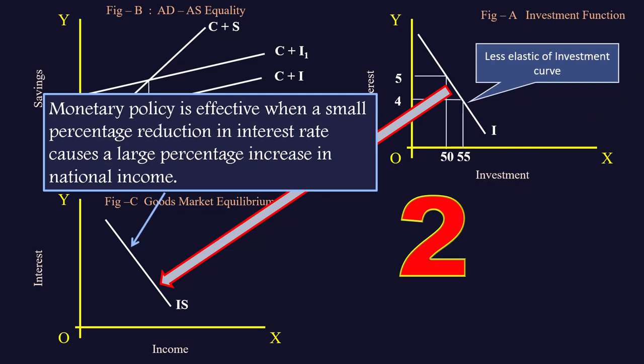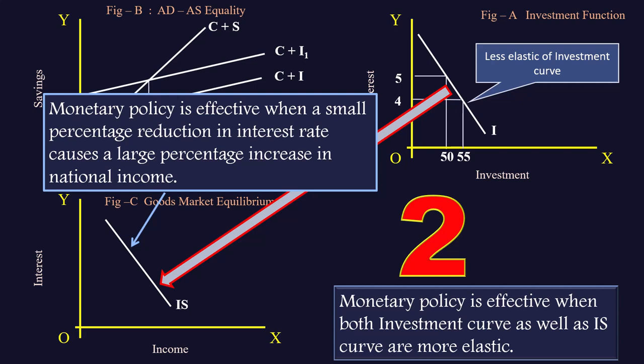Number 2: Monetary policy is effective when a small percentage reduction in interest rate causes a large percentage increase in national income. It means monetary policy is effective when both investment curve as well as IS curve are more elastic or relatively flat. By keeping these two points, let us consider two cases.